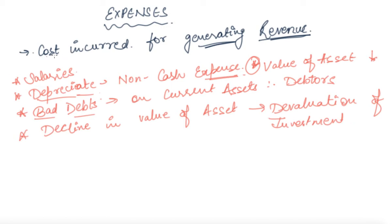This is what expense means — the cost incurred for generating revenue. Salary helps in generating revenue. Depreciation is done for the asset, and if we have made some purchase of an asset, then the value will ultimately depreciate. But depreciation is done because of the use of that asset, and the use of that asset will help in generating revenue.